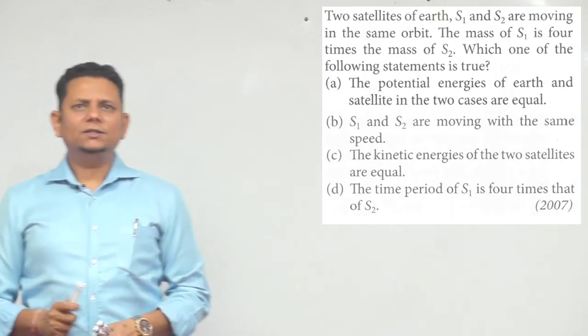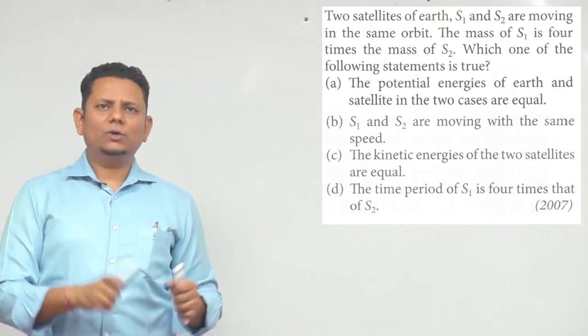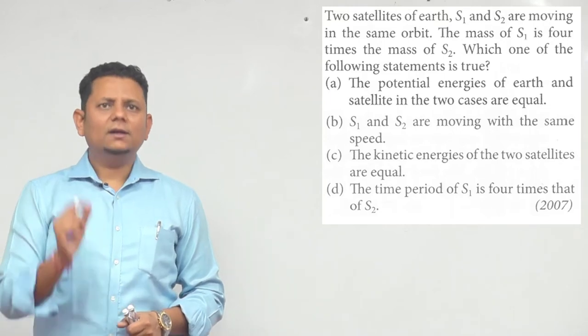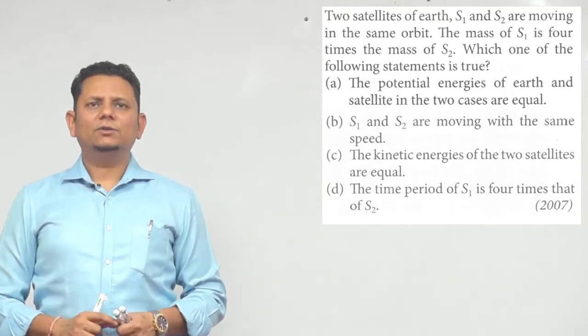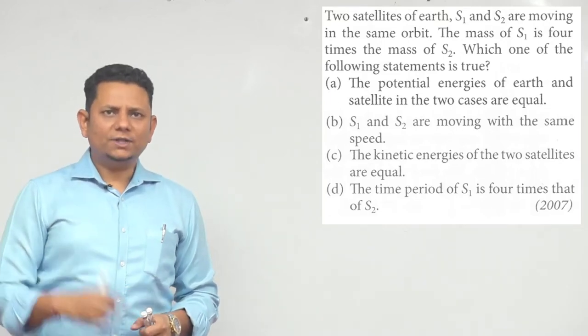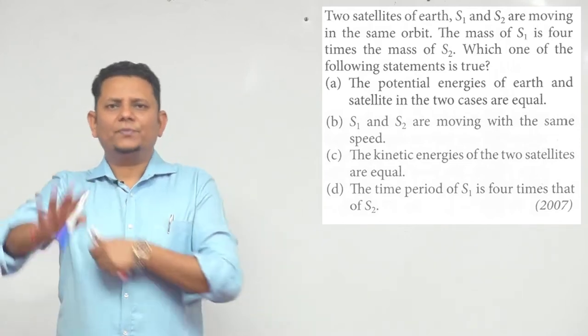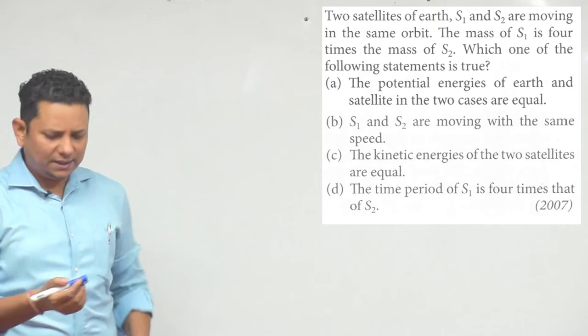The potential energy of Earth and satellite in the two cases are equal. Second option: S1 and S2 are moving with the same speed. Third option: kinetic energy of the two satellites are equal. Fourth option: the time period of S1 is four times that of S2. All right, four options. Now we examine.